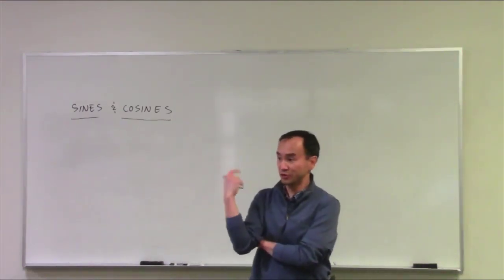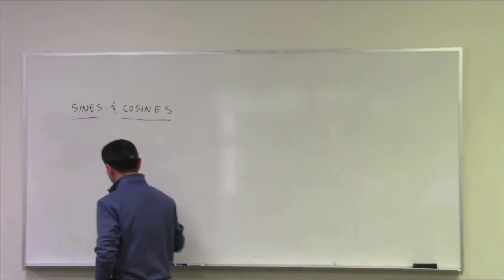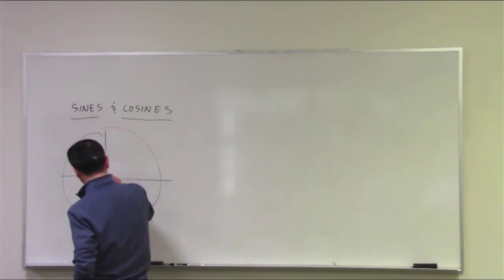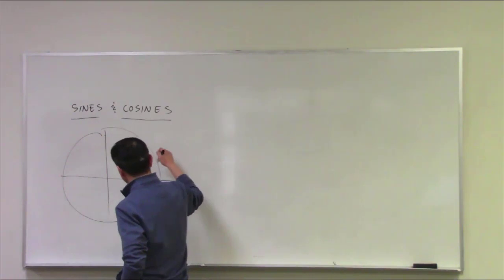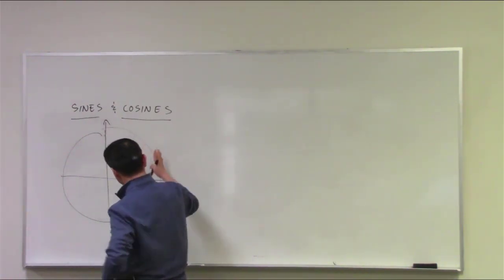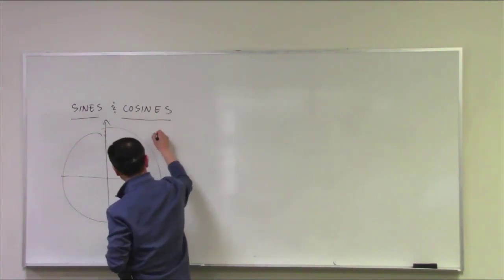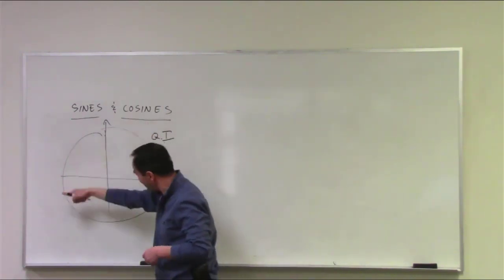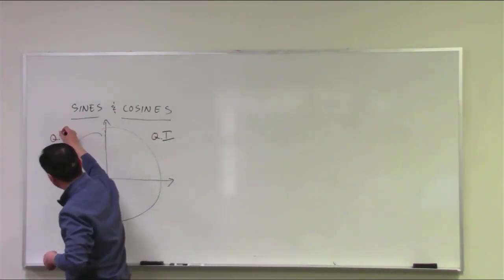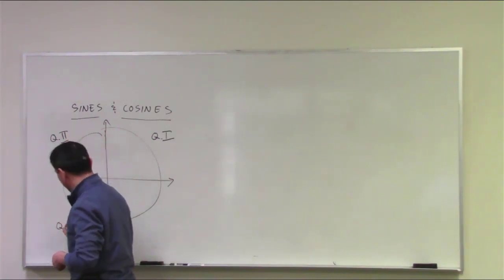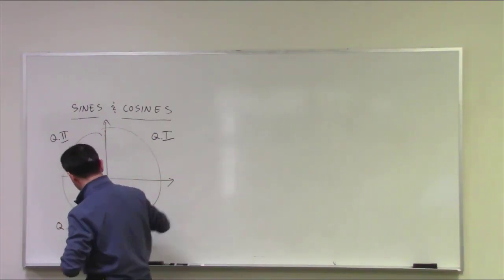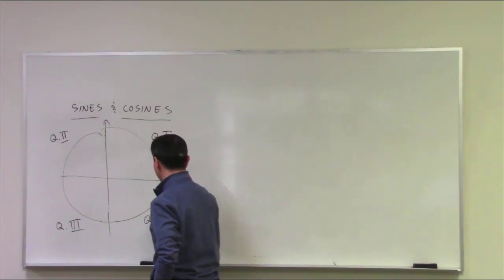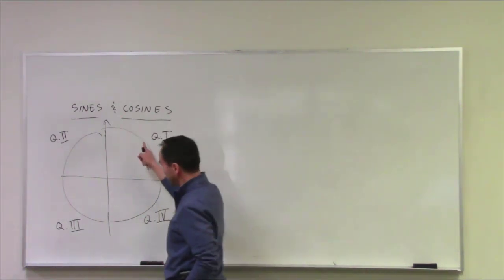Let's look at the unit circle again. For any circle, most easily we look at the unit circle with radius 1. In the language we've been using, the first 90-degree angle is quadrant 1 — one quarter of the whole circle. Going counterclockwise, that's quadrant 2, then quadrant 3 down here, and then the last 90-degree angle is quadrant 4.